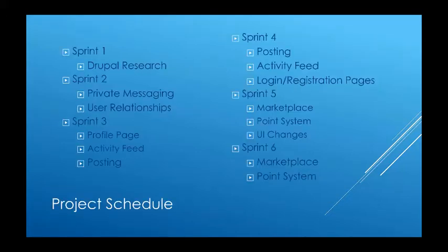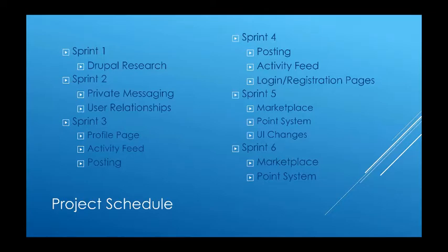We had a total of six sprints throughout the semester. Sprint one focused on researching how to use Drupal and looking into some of the potential modules we would want to use. Sprint two, we worked on setting up a private messaging system and creating user relationships, such as followers and following. Sprint three, we created a profile page, an activity feed, and a way to post. This also continued into sprint four, along with creating login and registration pages. Sprint five, we created the marketplace, began working on a point system for influencers, and made some UI changes that our sponsors wanted. And then we finished out the semester in sprint six with continued work on the marketplace and the point system.